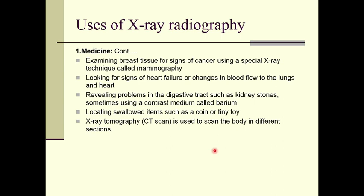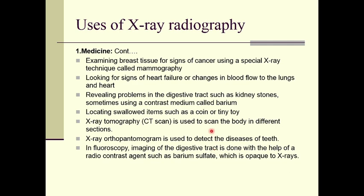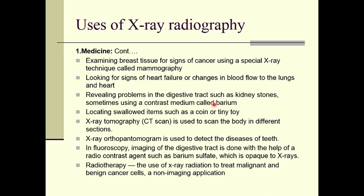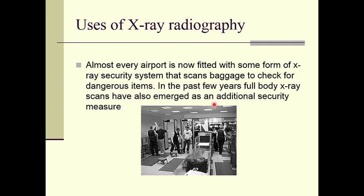X-ray tomography or CT scans is used to scan the body in different sections — we will see the CT scan application in this lecture. X-ray orthopantomogram is used to detect disease in teeth. In fluoroscopy, imaging of the digestive tract is done with radio contrast agents such as barium sulfate, which is opaque to X-rays. Radiotherapy uses X-ray radiation to treat malignant and benign cancer cells. Almost every airport is now fitted with X-ray security systems that scan baggage and full body X-ray scans have also emerged as an additional security measure.